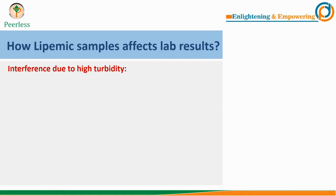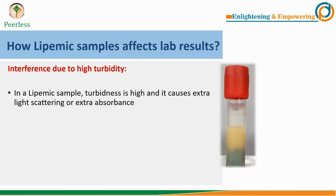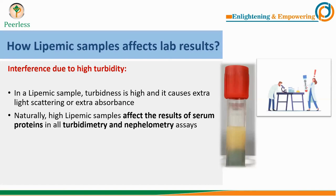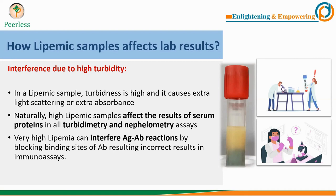There are three ways lipemic samples affect lab results. Firstly, in lipemic samples turbidness is high, causing extra light scattering and extra absorbance. Since turbidimetry and nephelometry tests are based on absorbance and scattering results, all serum protein assays are affected by lipemic samples. Additionally, very high lipemia can interfere with antigen-antibody reactions, and hence it can affect immunoassays as well.